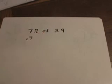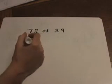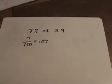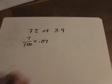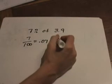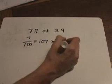What if we have to find 7% of 3.9? Exact same process, but keep in mind that 7% is not 0.7 or 0.70. That's 70%. 7% means 7 out of 100, which is 0.07. You say that number as 7 hundredths. So we're going to find 7 hundredths times 3.9.